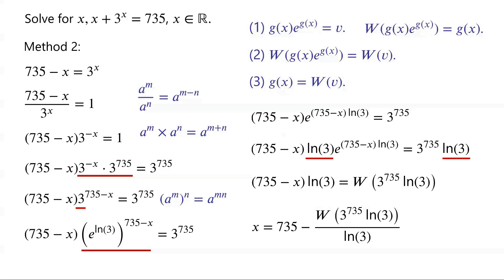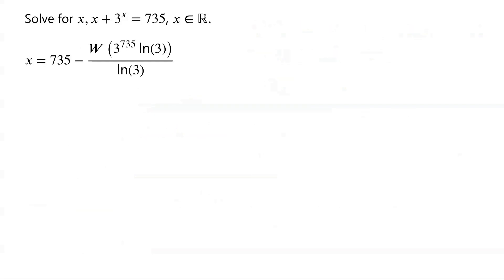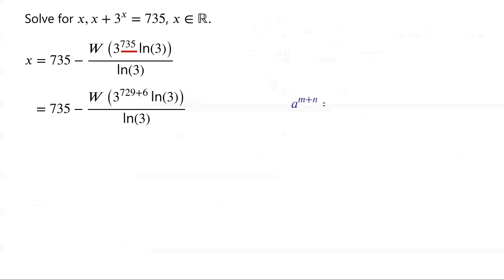Sometimes the answer can be simplified further. 735 can be written as 729 plus 6. We know that a to the power of m plus n is equal to a to the power of m times a to the power of n.